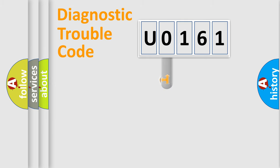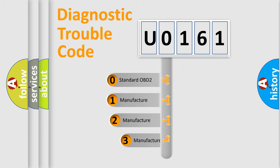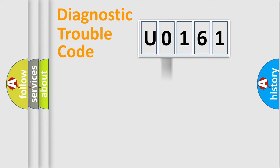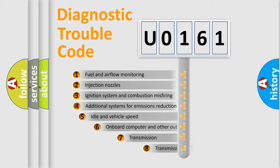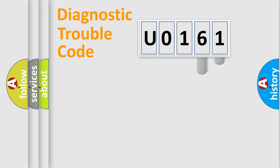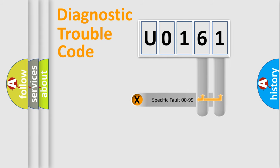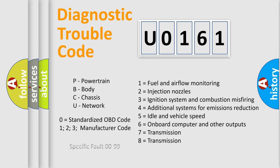This distribution is defined in the first character of the code. If the second character is expressed as 0, it is a standardized error. In the case of numbers 1, 2, or 3, it is a more specific expression of the car-specific error. The third character specifies a subset of errors. The distribution shown is valid only for the standardized DTC code, and only the last two characters define the specific fault of the group. This division is valid only if the second character code is expressed by the number 0.